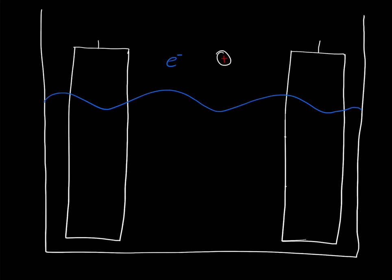Electrons have a negative charge and protons have a positive charge. This is going to cause them to be attracted to one another — opposites attract. But if you have two protons next to one another, those are going to feel a repulsion force. The same charges are going to be repulsed, and the same thing with the same negative charges. Keep that in mind as we get into this video.